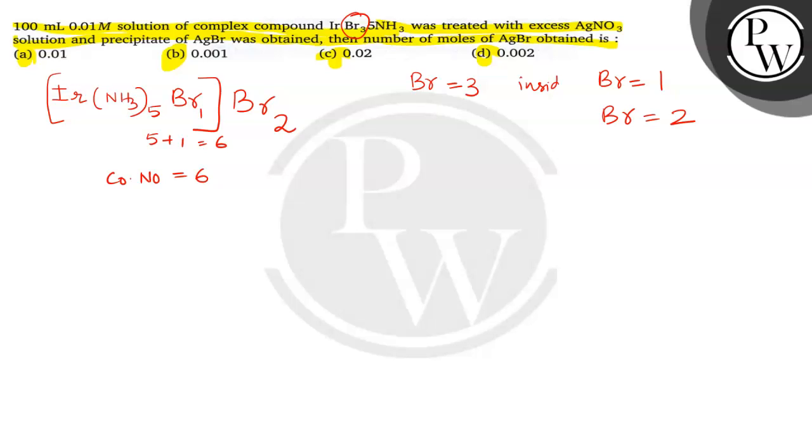So this on ionization, this complex on ionization produces 2 Br⁻ ions because 2 Br atoms are outside. So outside counter ions are ionized. So [Ir(NH₃)₅Br]²⁺ with plus 2, 2 minus are removed, so automatically plus 2 will get.